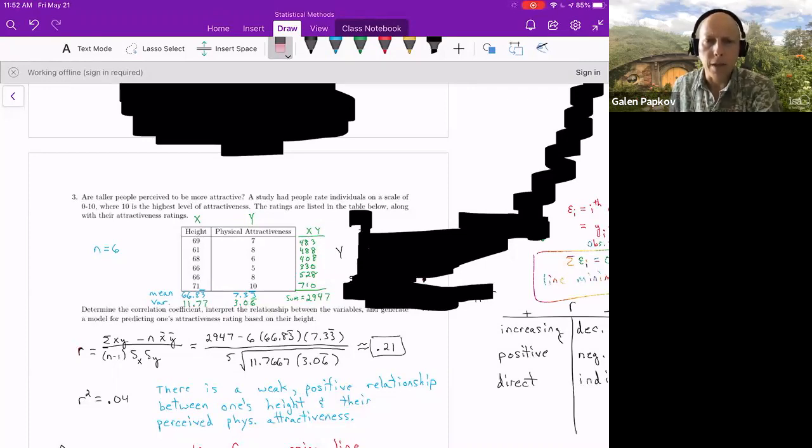So that may explain it. But if any of your numbers are further off, then there's probably a calculation issue going on. 0.21 is pretty small, and when you square that, you get 0.04. So this is implying that there's a negligible relationship. It is small, weak, positive. And so there is a weak positive relationship between one's height and their perceived physical attractiveness is what this data is saying.